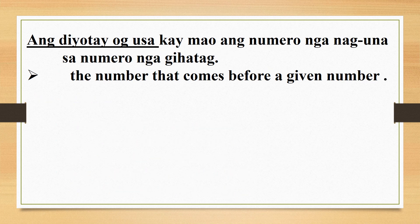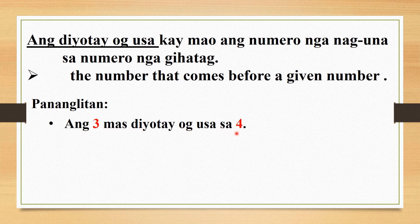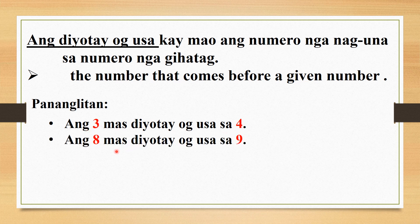Now, mas jutay o gusa, or one less — kay mao ang numero nga naguna sa gihatag nga numero, or the number that comes before a given number. For example: ang 3, mas jutay o gusa sa 4 — so ang naguna sa 4 kay 3. Ang 8, mas jutay o gusa sa 9 — ang 8 nag-una sa 9. So it comes before a given number.